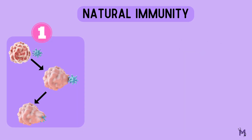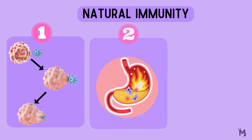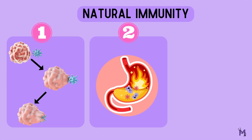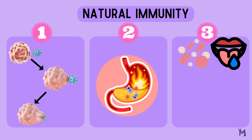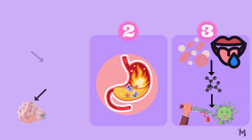Natural immunity includes mainly three things: first, the phagocytosis of bacteria by white blood cells and cells of the tissue macrophage system; second, it can destroy the acid secretions of the stomach; and third, it also includes the presence of chemical compounds in the blood and saliva which will destroy microorganisms.